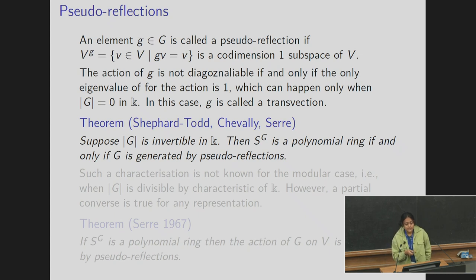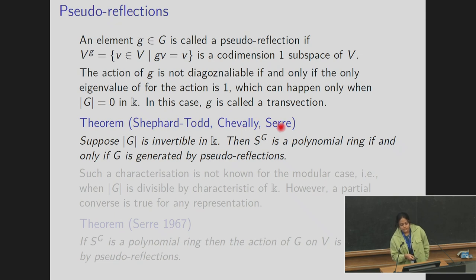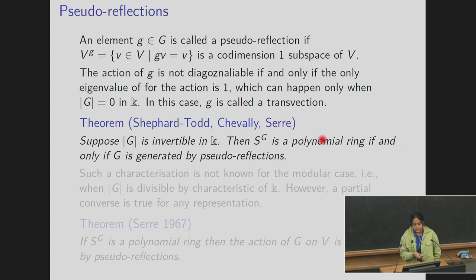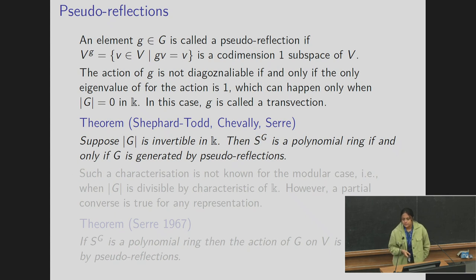When the order of G is 0 in K we call it the modular case, and when the order of G is invertible in K it is called the non-modular case. The question is properly understood in the non-modular case and is answered by Shephard, Todd, Chevalley, and Serre for different cases. In the non-modular case it is known that the invariant ring is a polynomial ring if and only if G is generated by pseudo reflections — thus a proper characterization is given.